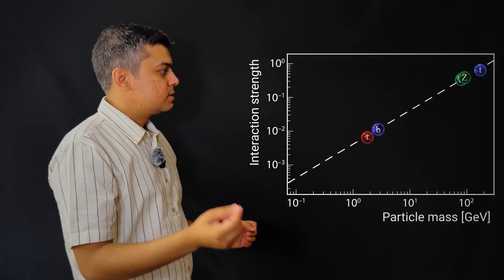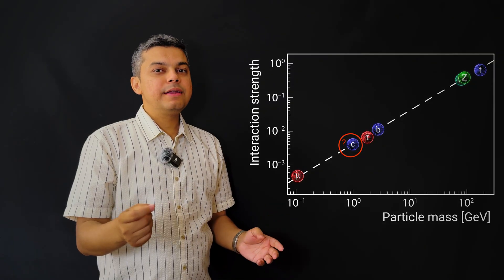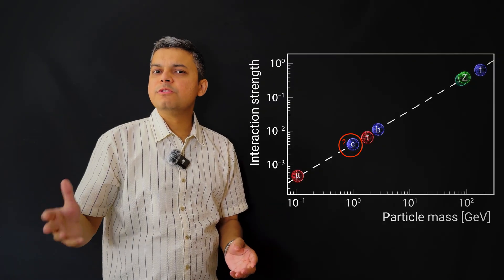For other particles like the muon and charm quark, we are far ahead of schedule, thanks to machine learning algorithms similar to the ones used in ChatGPT.